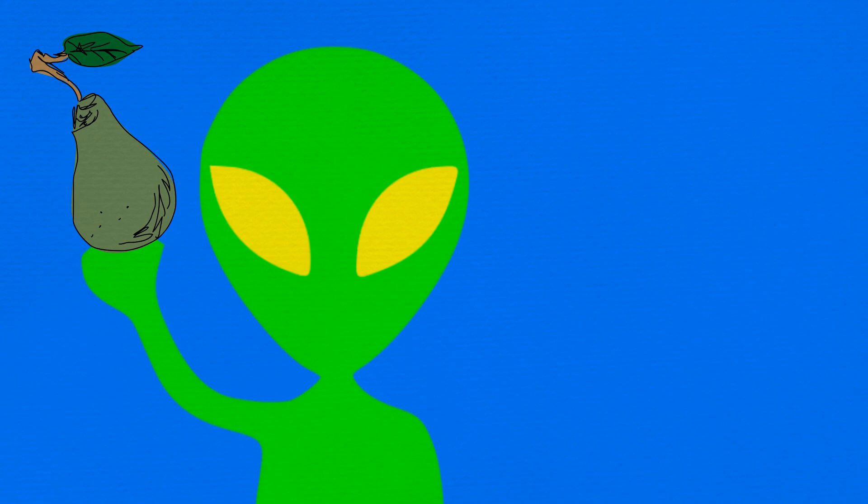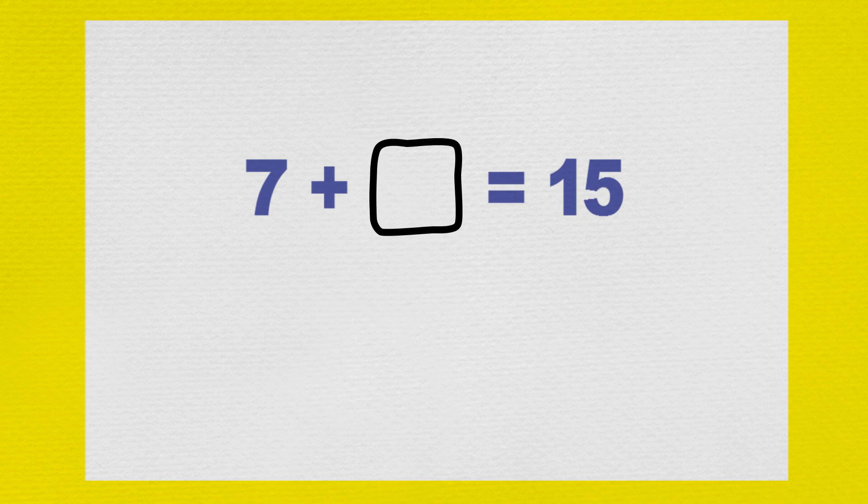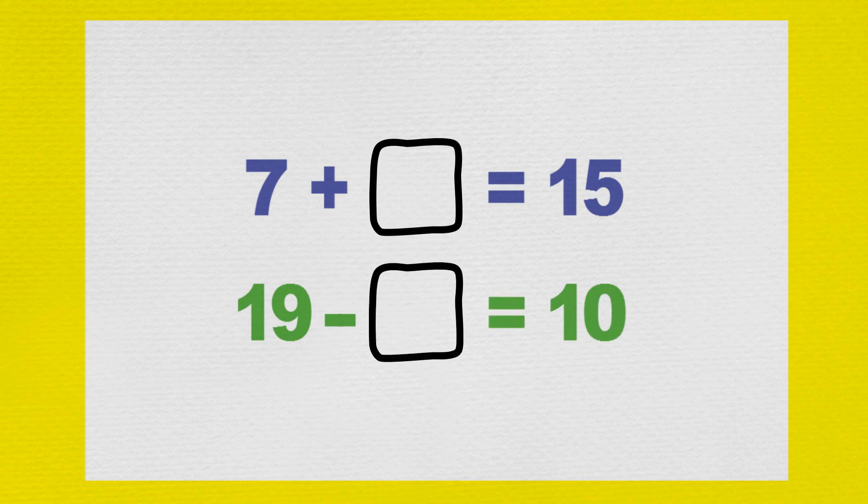OK, my last question is in two parts, because pears are my favourite earth food. Work out the missing number in each of these two number sentences. In other words, what is the value of the box? Then he wrote: seven plus box equals fifteen, and nineteen minus box equals ten.